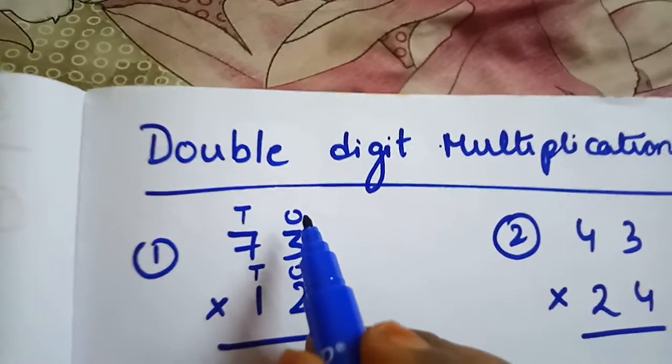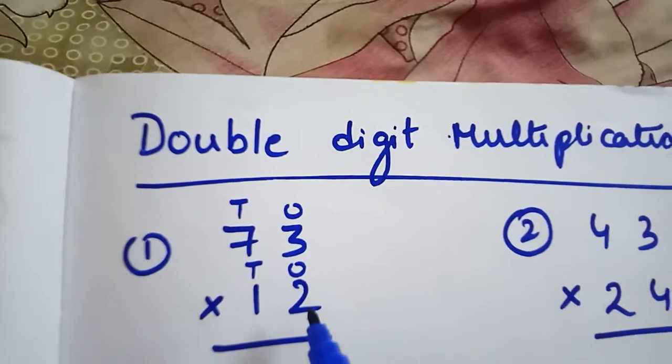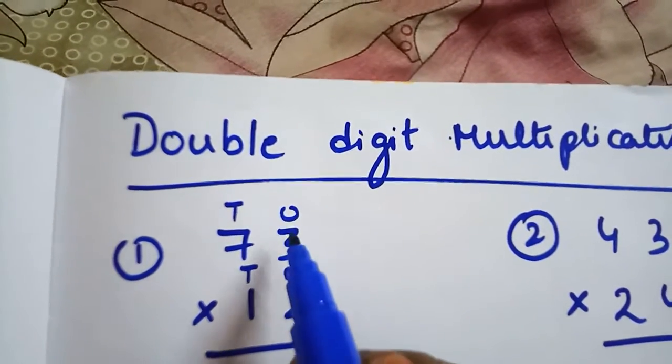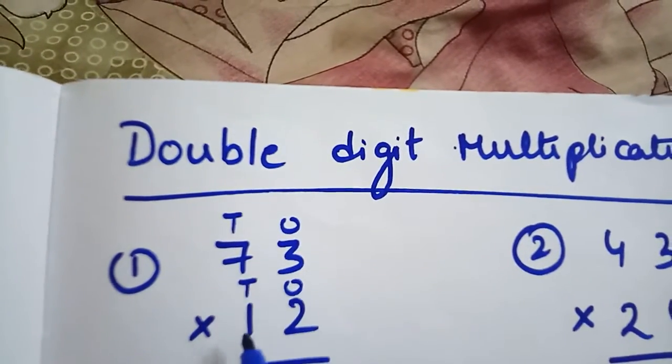This is ones place, tens place, ones place, tens place. First of all, always multiply ones place with ones place, then ones place with tens place, next tens place with ones place, next tens place with tens place.